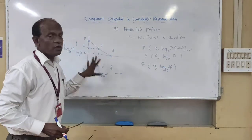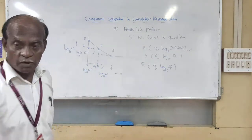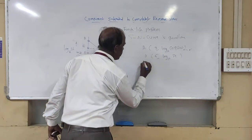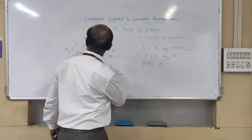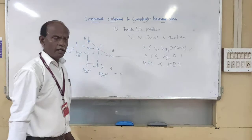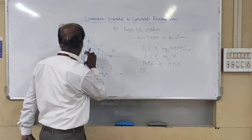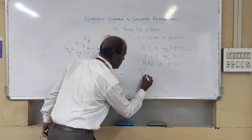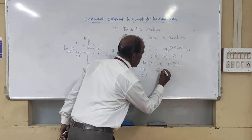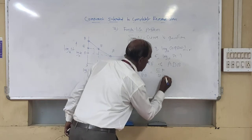So making use of this diagram, we determine the life of the component. From the similar triangles: triangle AEF and triangle ADB are similar. Therefore AEF over ADB equals EF over BD.